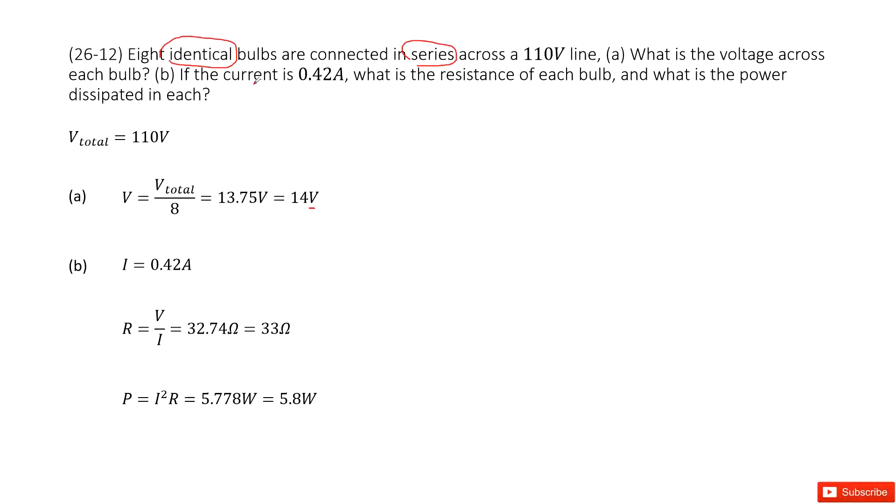The next one, if the current is 0.42 amps, what is the resistance for each lightbulb? And what is the power in each lightbulb? So now look at the resistance. As we can see,